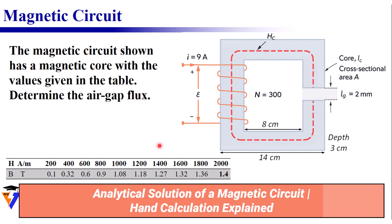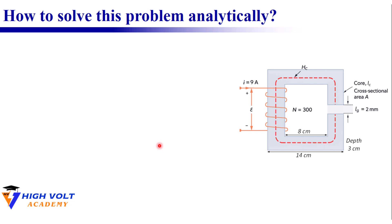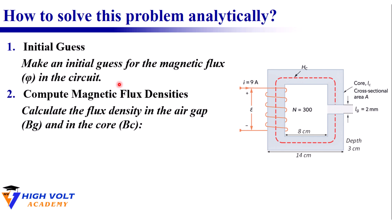Let's now switch to analytical solution and see how we can solve the same magnetic circuit by hand and then compare it to COMSOL results. Because the core is non-linear we begin with an initial guess for the magnetic flux in the air gap.